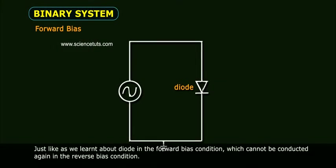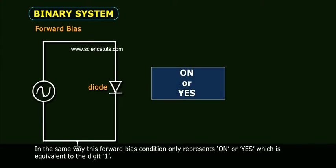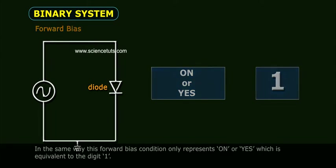Just like as we have learnt about diode in the forward bias condition, which cannot be conducted again in the reverse bias condition. In the same way, this forward bias condition only represents on or yes, which is equivalent to the digit one.